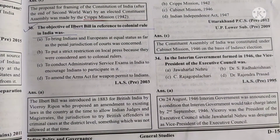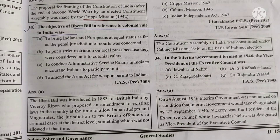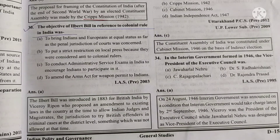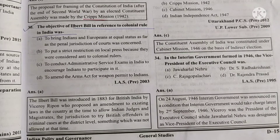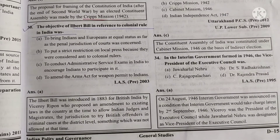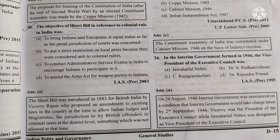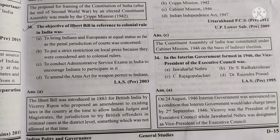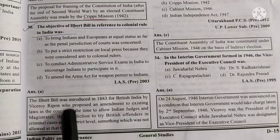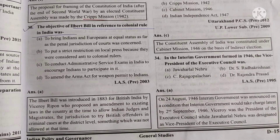According to the explanation, the Ilbert Bill was introduced in 1883 in British India by Viceroy Ripon. It proposed an amendment to existing laws to allow Indian judges and magistrates jurisdiction to try British offenders in criminal cases at the district level — something which was not allowed at that time. So the context of this question relates to Viceroy Ripon's 1883 amendment for Indian magistrates and judges.